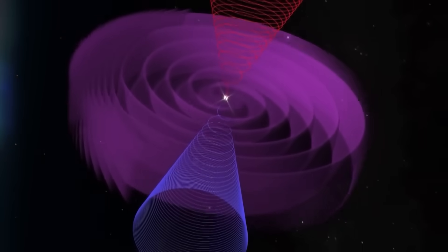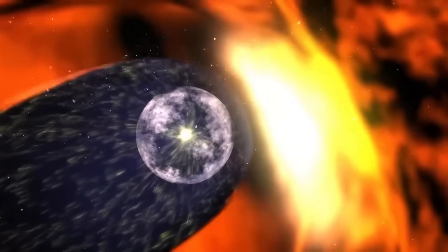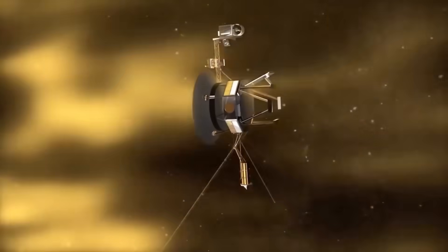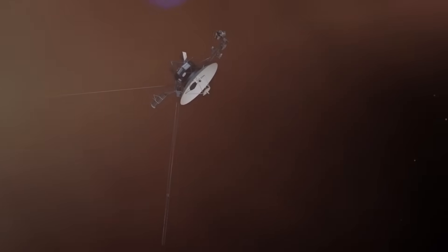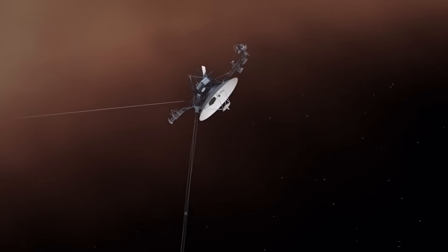For nearly half a century, Voyager 1 traveled outward, alone, silent, and obedient. It wasn't built to discover intelligence. It wasn't designed to open doors. And yet, it may have done both. What began as a glitch became a pattern.